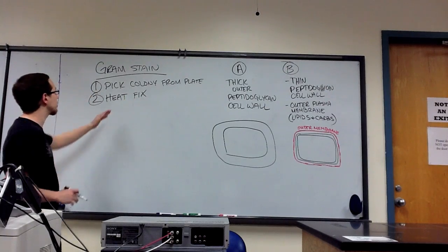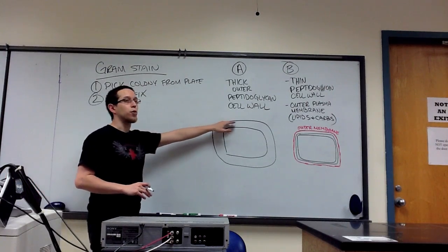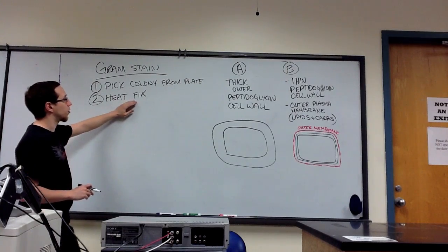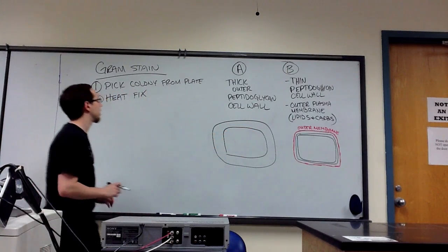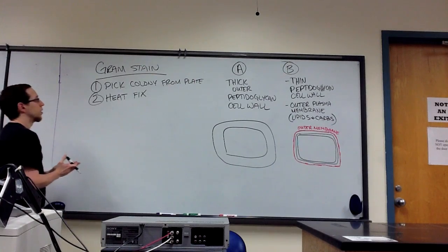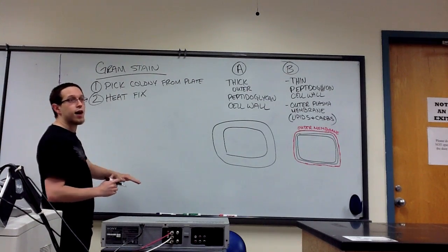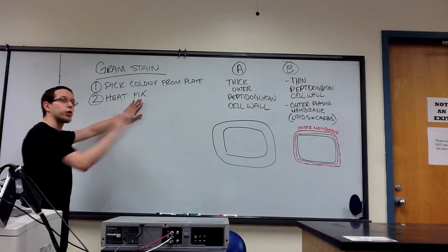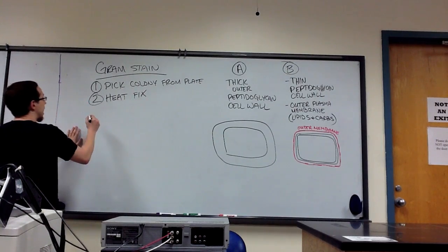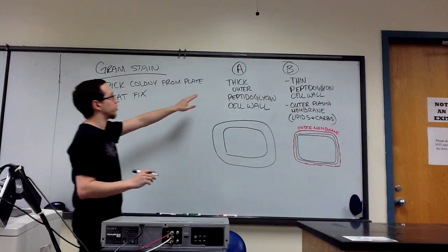What this means is it causes the proteins and carbohydrates and lipids involved in any of these structures of bacteria to actually stick to the surface of the slide. That keeps the bacteria on the slide as you're performing the staining procedure. If you didn't do this, you'd wash your cells off the slide and not develop anything. So you heat fix it, and now we're going to actually begin the staining procedure.